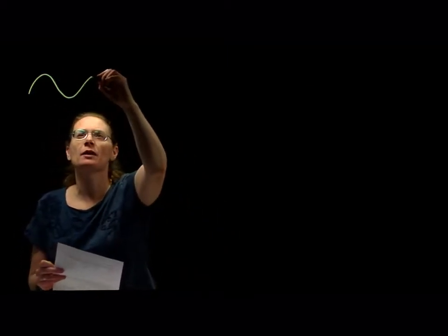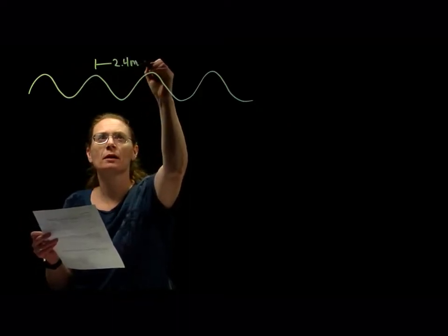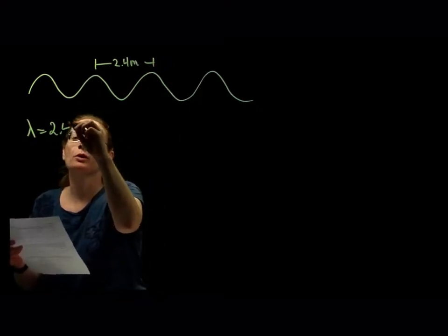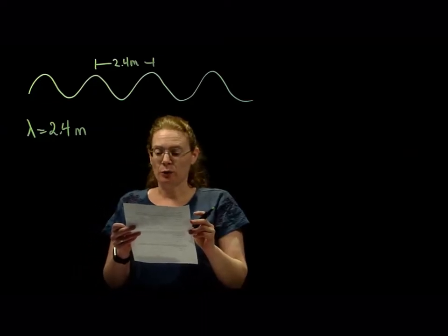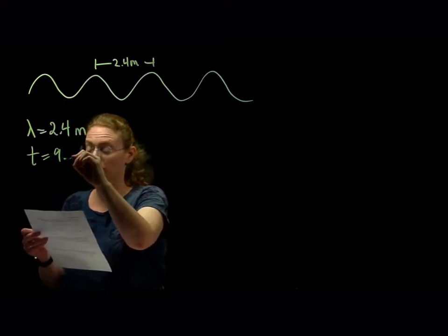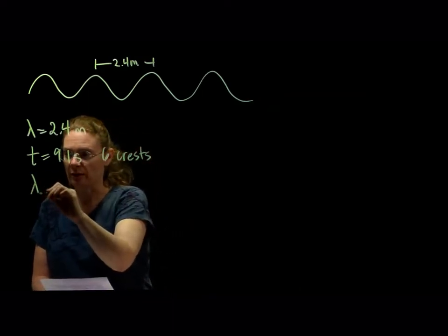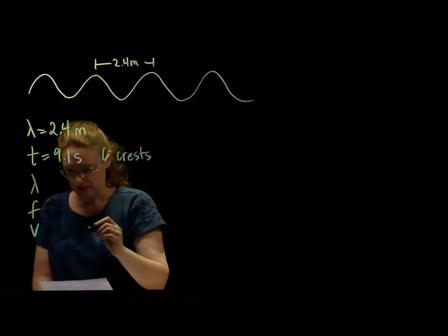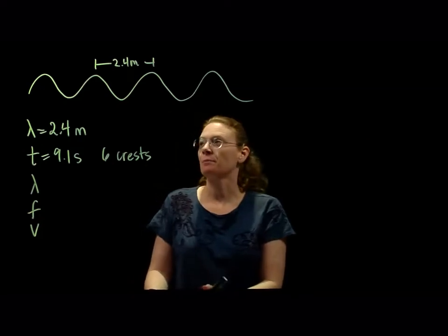So we have a lengthy rope with a series of waves coming back and forth along it. We're told that the crests are 2.4 meters apart — that's our wavelength. So our wavelength is 2.4 meters. We know the wavelength already; that's the distance measured crest to crest, peak to peak.